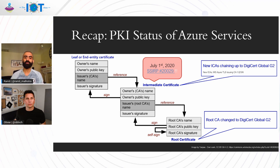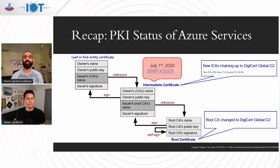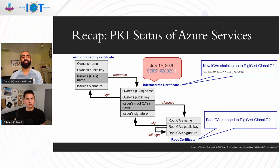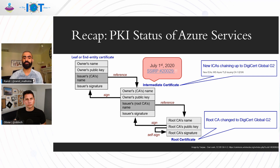All leaf certificates — all certificates that will be presented to clients by websites, web services, IoT Hub and DPS — will going forward have a chain that chains up to DigiCert Global G2. Now, last year, while most of Azure and most of IoT services moved to G2, Hub and DPS particularly decided to hold off that migration. That was done primarily for our customers — we realized there was not enough time for customers to understand and prepare their devices for this migration.